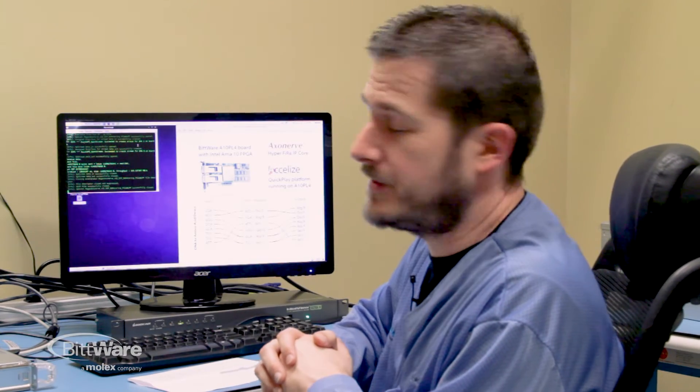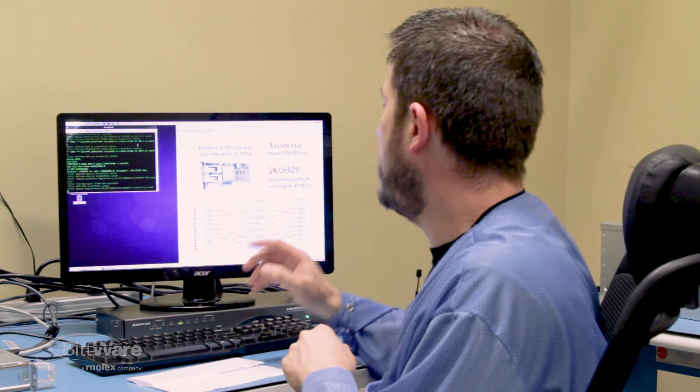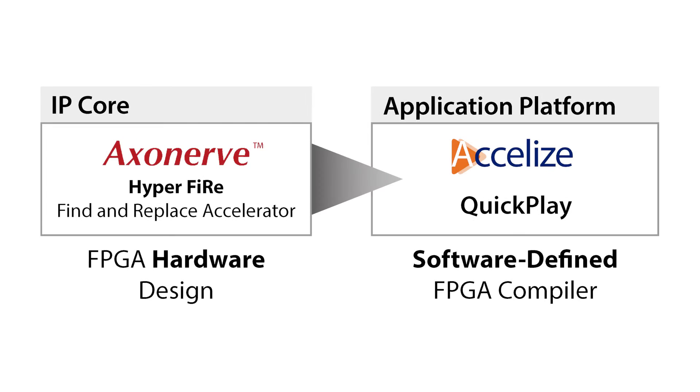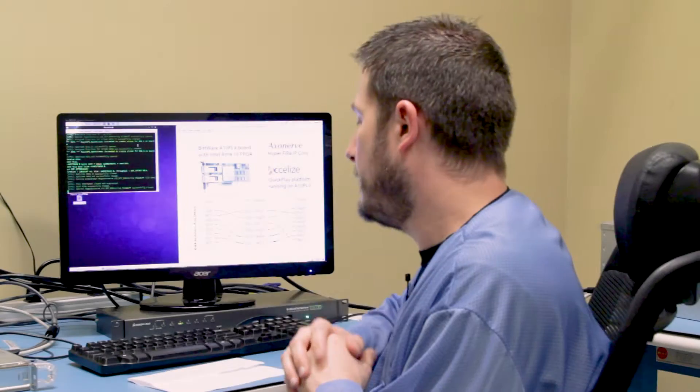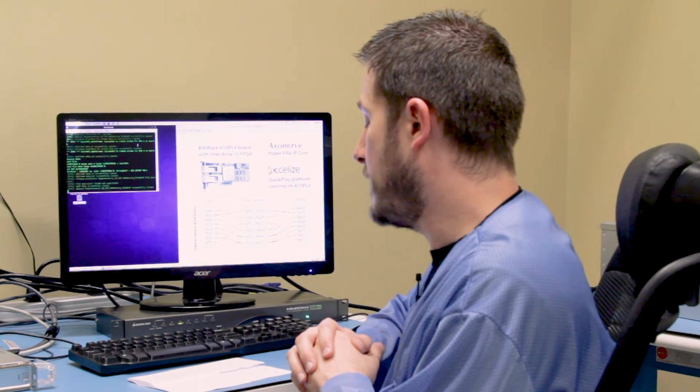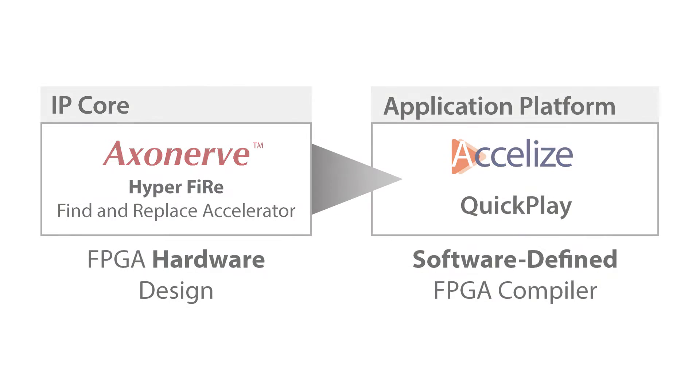So let me summarize what we've just seen. So we were using the HyperFire application, which is part of the AxoNerve IP core from Nagase. But instead of having to develop our own FPGA code to interface to that, we used the Excelize QuickPlay platform, which was already set up for this HyperFire application and a range of other applications.